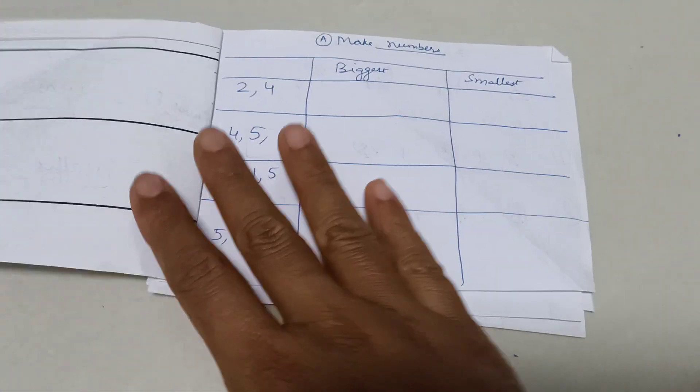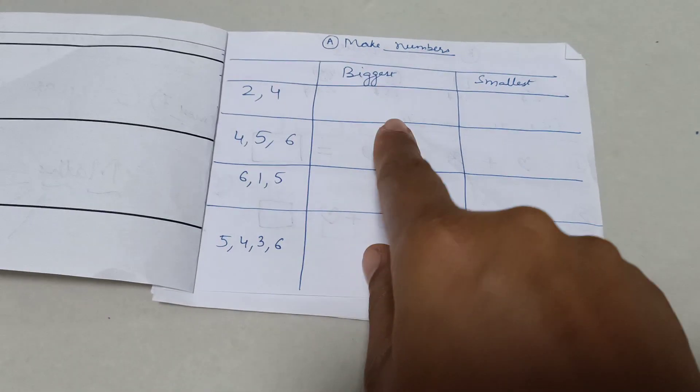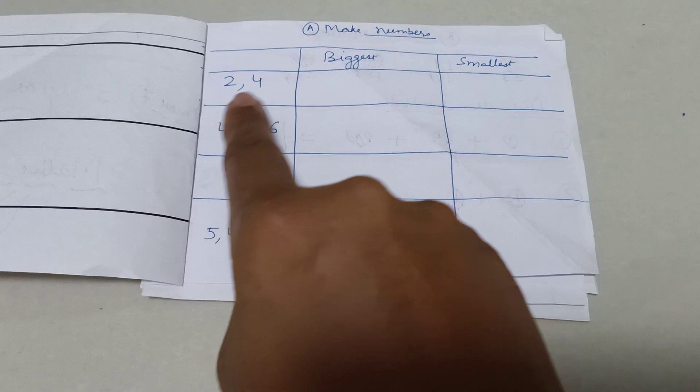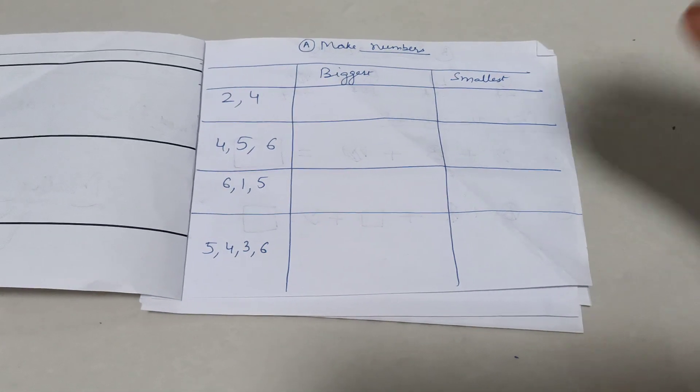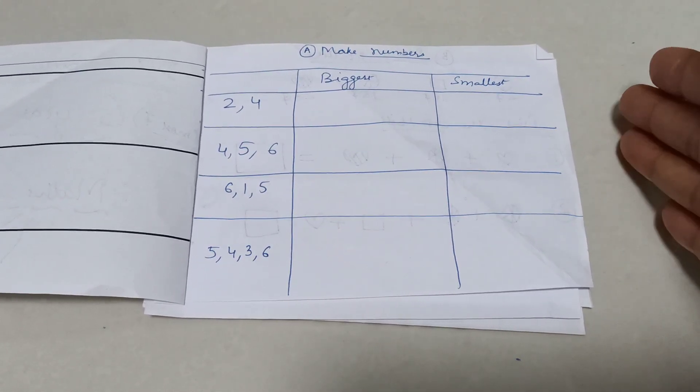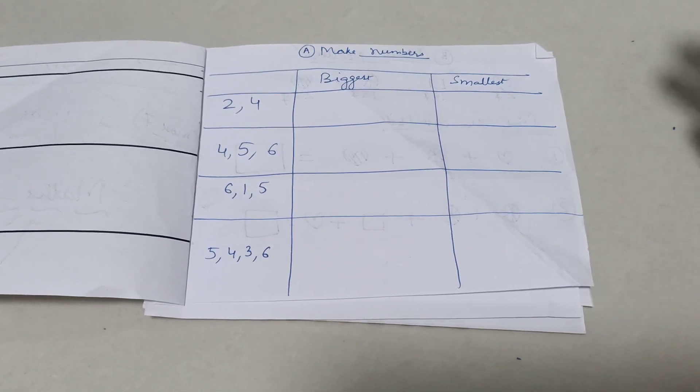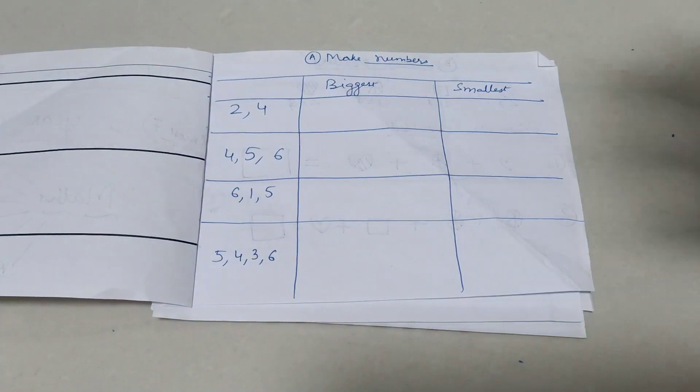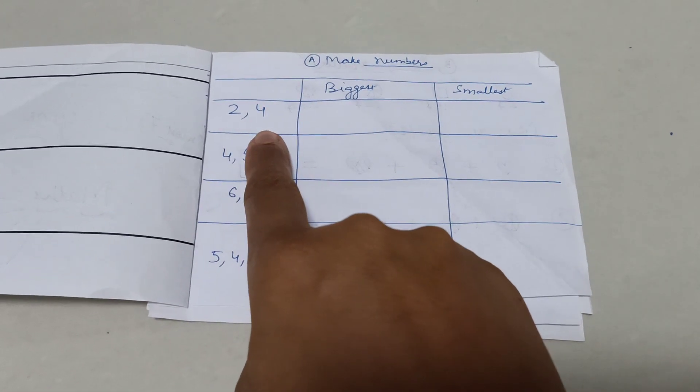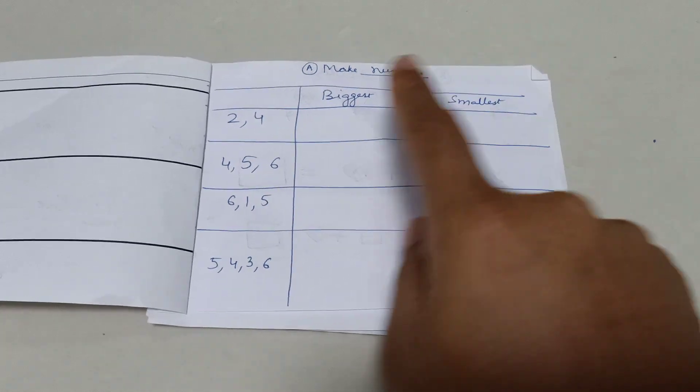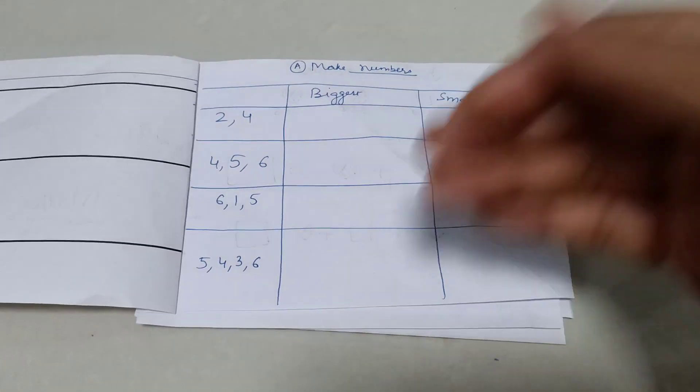So let's start with the first question. Here we are talking about making numbers. What is the biggest and smallest number you can make using these two digits? We check the 10th number first and then we check the 1s to see which is a bigger number. Like if 2, 4, what is the biggest number you can make? 42. And what is the smallest number? 24. So we are starting with a warm up round.